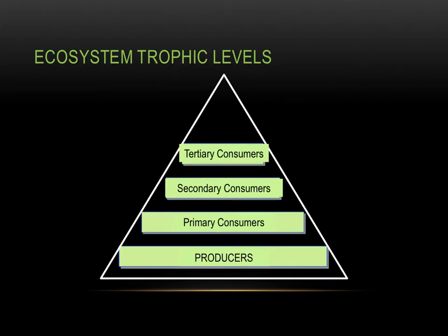This triangle shows a simple model of how organisms are organized into food chains within an ecosystem. The bottom trophic level, or feeding level, contains producers. If this were a land ecosystem, the producers would include plants that make their food via photosynthesis. All levels above this are consumers, or heterotrophs. The primary consumers are typically herbivores, while the secondary and tertiary consumers could be carnivores or omnivores, depending on the ecosystem.